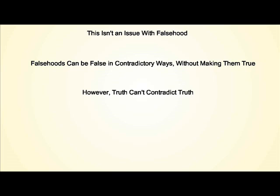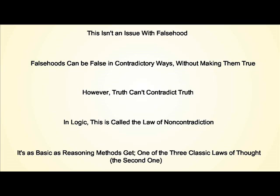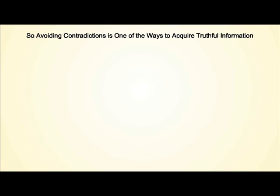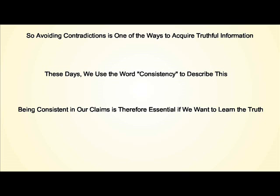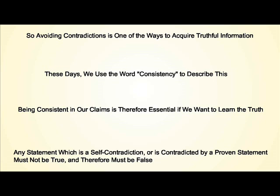With falsehood, this isn't an issue, because falsehoods can be false in contradictory ways and remain just as false. But truth can't contradict truth. In logic, we refer to this as the law of non-contradiction, and it is as basic as logical reasoning methods get — one of the three classic laws of thought. So we know that avoiding contradictions is one of the key ways to acquire truthful information of every sort. In the modern world, we use the word consistency to describe this. Being consistent in our claims is essential if we want to learn the truth, so we can conclude that any statement which is a self-contradiction or is contradicted by another proven statement must not be true and must therefore be a falsehood.